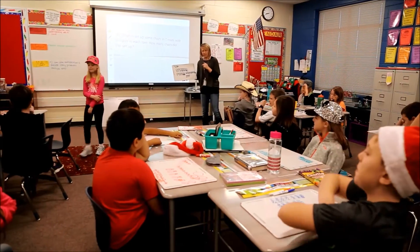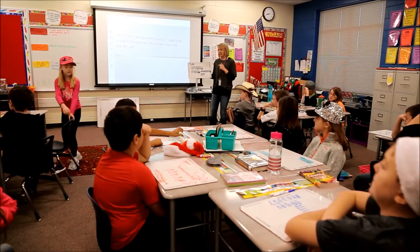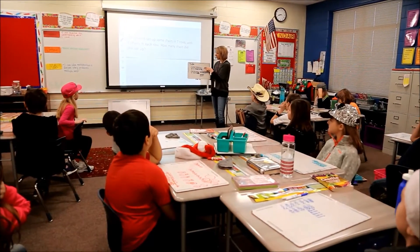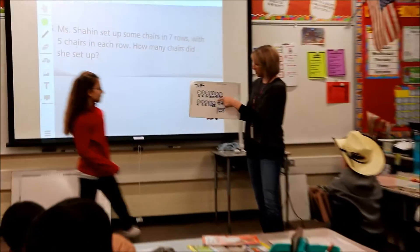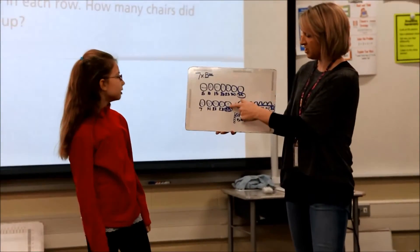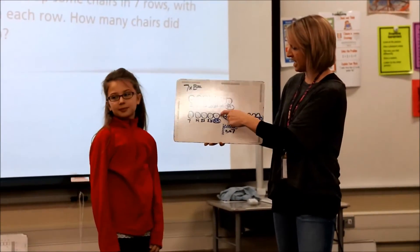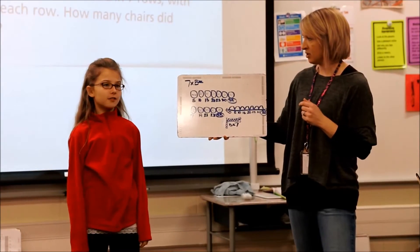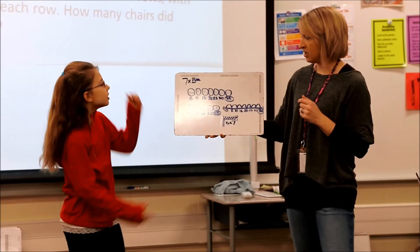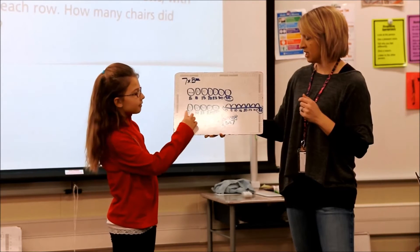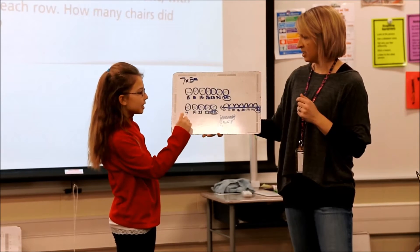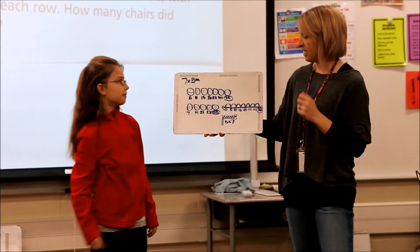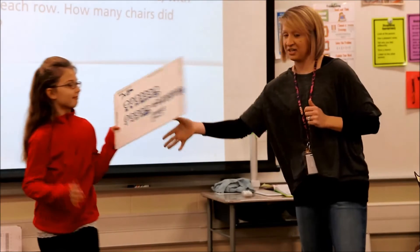Now, Olivia, could you please come up? Brooks just told me that there were seven groups of five. This picture doesn't look like this one. Can you add on to what Grace said and tell me about this one? Well, the commutative property says that you can switch your factors and get the same answer. So she switched her factors and did five groups of seven. And then seven, fourteen, twenty-one, twenty-eight, thirty-five. Excellent job. Very good.